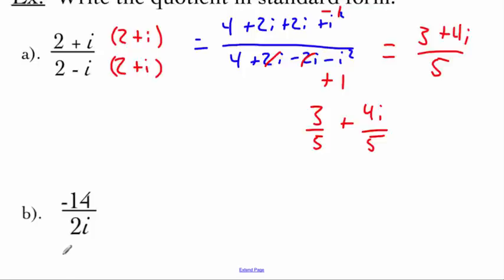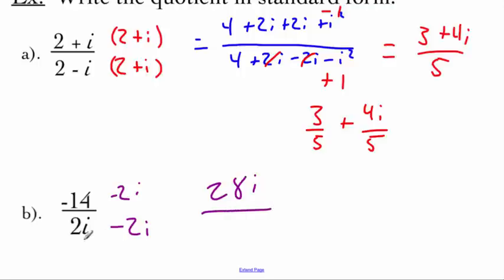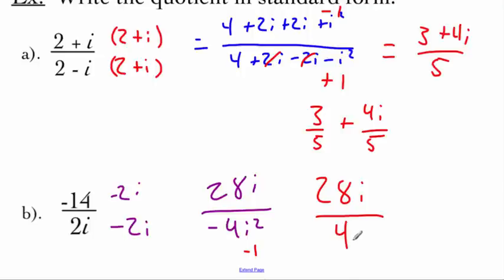In the next example, the complex number on the bottom has an a value of 0 — it's a pure imaginary number. It still has a conjugate; we just change the sign to get negative 2i. Multiplying top and bottom by negative 2i: negative 14 times negative 2i gives positive 28i. On the bottom, 2i times negative 2i gives negative 4i squared, and since i squared is negative 1, that's 28i over 4, which simplifies to 7i.